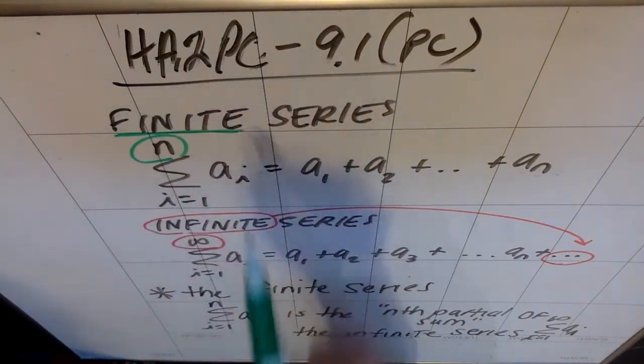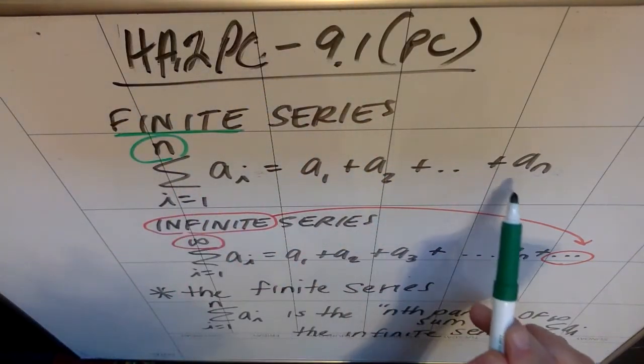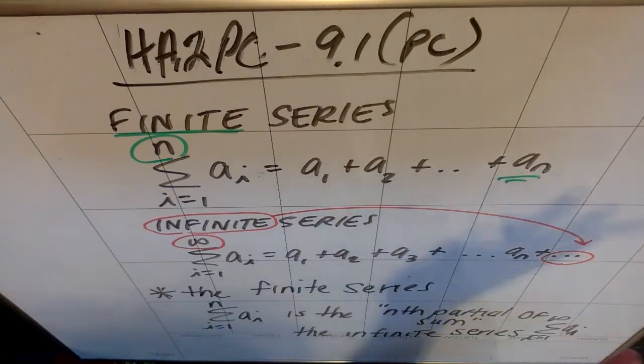So what makes this series finite is that it only goes up to the a sub nth term and stops. n could be a hundred, n could be a million, n could be a hundred million, billion. Doesn't matter. Still finite. It stops at a specific number.